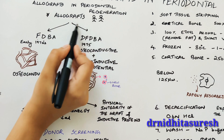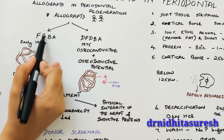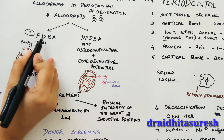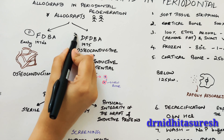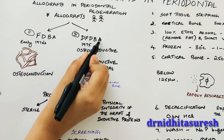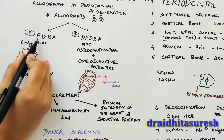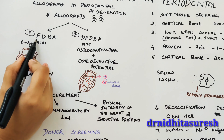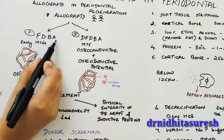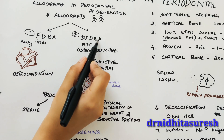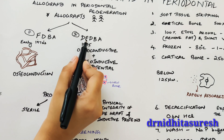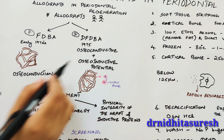Allografts are generally used in two forms. The first one is FDBA and the second one is DFDBA — meaning FDBA stands for freeze-dried bone allograft and DFDBA stands for demineralized freeze-dried bone allograft.